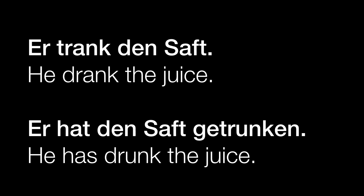Er trank den Saft — that's the preterite. This verb doesn't take any ending for the preterite: er trank. There's no extra ending — no T, no E, no TE, no EN, nothing. No ending there, but we change the vowel. Trinken is the infinitive with an I; er trinkt is the present tense; er trank is the past.